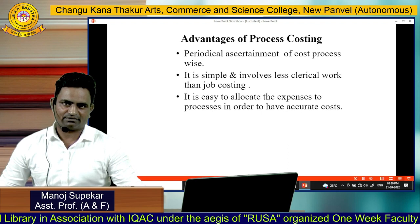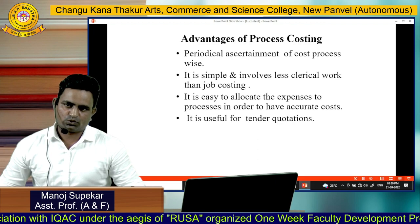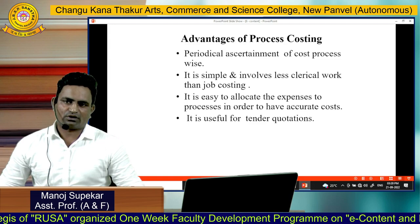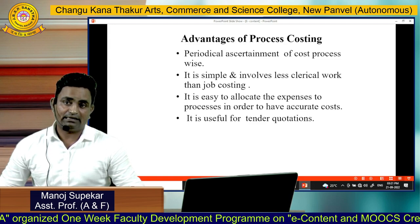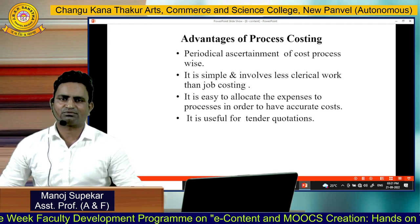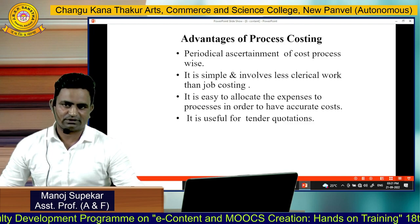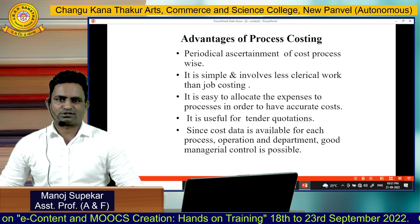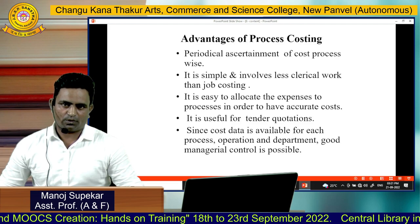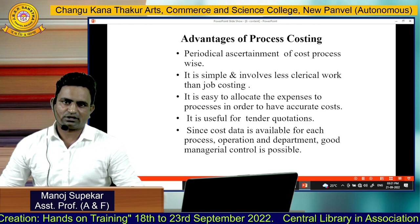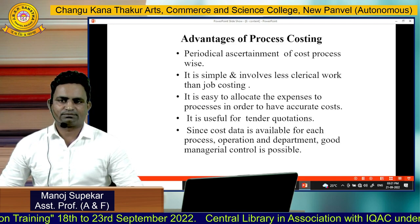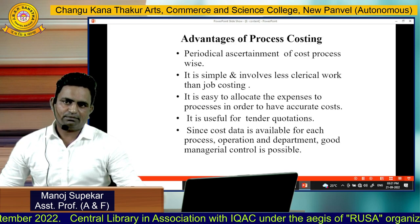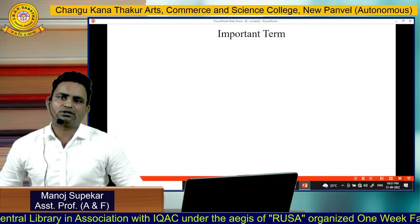Process costing is also useful for tender quotations. Organizations that want to obtain tenders from other organizations need process costing to finalize the value of goods, and with its help they can easily get tenders. Another advantage is that since cost data is available for each process, operation, and department, managerial control is possible, enabling smooth operation for manufacturing of goods.